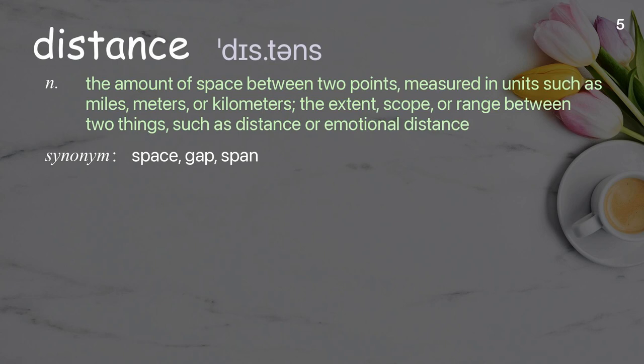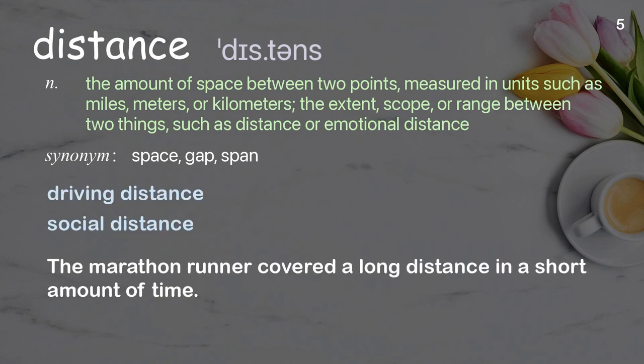Distance: the amount of space between two points, measured in units such as miles, meters, or kilometers; the extent, scope, or range between two things, such as physical or emotional distance. Examples: driving distance; social distance; the marathon runner covered a long distance in a short amount of time.